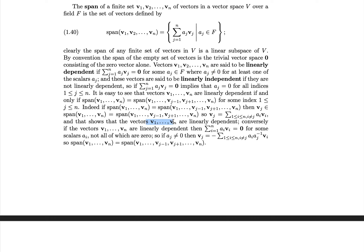This shows that the set v1 to vn is linearly dependent. Conversely, suppose that the vectors are linearly dependent; then the sum equals zero for some scalars, not all of which are zero. Let the j-th one be non-zero. Then you can write v_j as the sum of negative a_i * a_j inverse terms, where a_j inverse is simply a_i over a_j — that's why a_j must be non-zero. So rearranging the sum to solve for v_j and dividing off the a_j term, you see that v_j is clearly in the span of the rest of the elements.